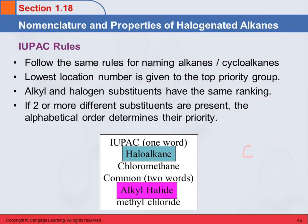Chloromethane — that's not a good color. This is methane, but it has a chlorine instead of one of the hydrogens. So the IUPAC name for this is Chloromethane.